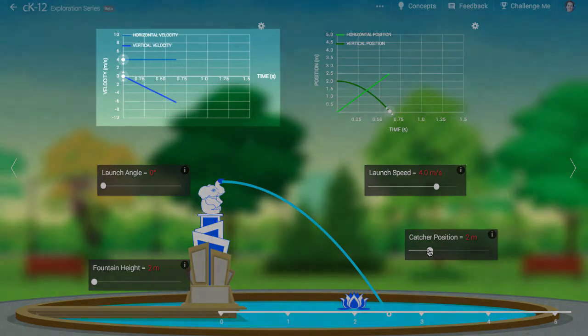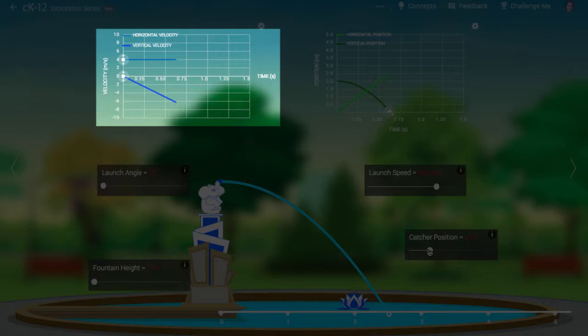A clue is in the graph at the top left. This is a graph of the horizontal component of velocity and the vertical component of velocity as functions of time. Two important facts are buried in this graph. First, you can see that the horizontal component of velocity doesn't change. It is fixed.